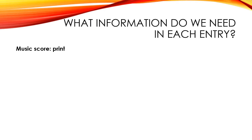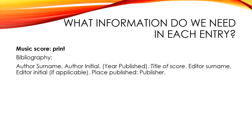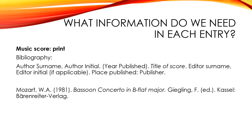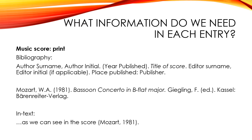Finally, we come to the printed score. You may recognise the bibliography format — it's very similar to a book. But here is where it gets a little tricky. Say we have a score and the composer is Mozart, but the score was published long after his death, as is the case in this example — an edition published in 1981. It's therefore important we include the editor in the citation. When it comes to in-text referencing, we have to include the same information, and it would appear like this. Though it may look odd to reference Mozart in 1981, it will become clear when looking at the bibliography. Remember, the in-text reference is just the first part of the code.